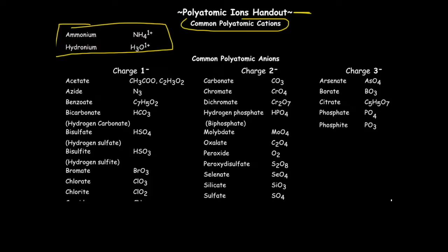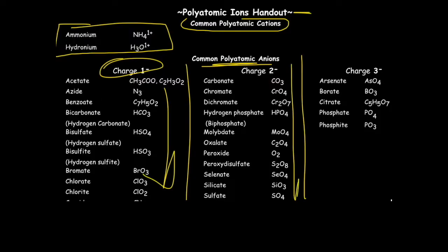Below that, which is the one we'll end up using a lot more, we've got common polyatomic anions, the negative ones, and they're divided into three groups. All of these here have a negative one charge. All of these have a negative two charge. And all of these have a negative three charge. Hopefully you're going to get used to using, just like you're getting used to the periodic table, you should be getting used to using the polyatomic ion handout.